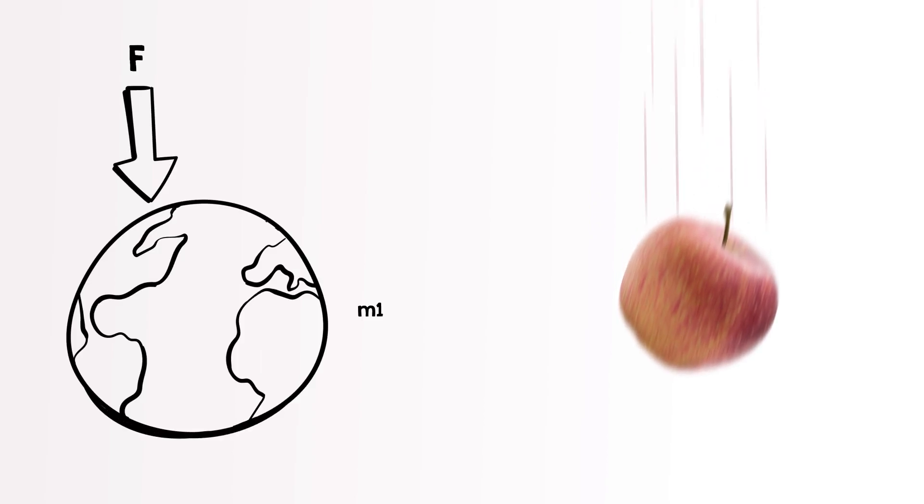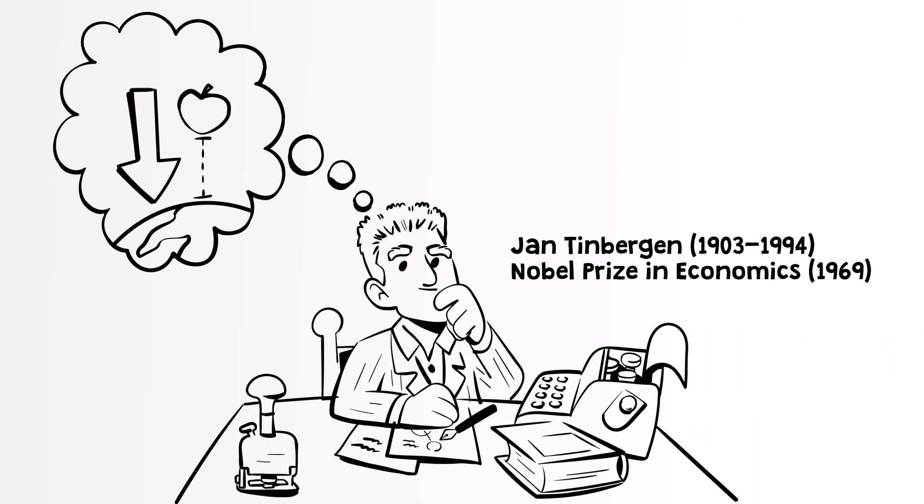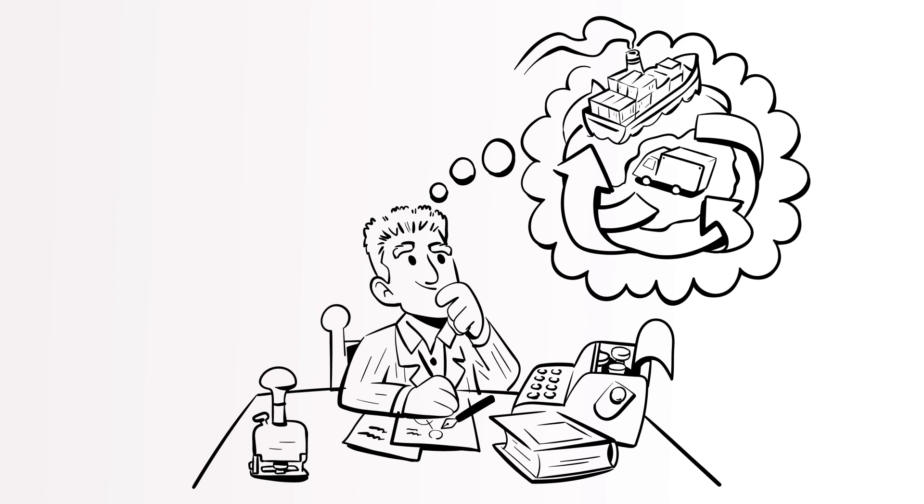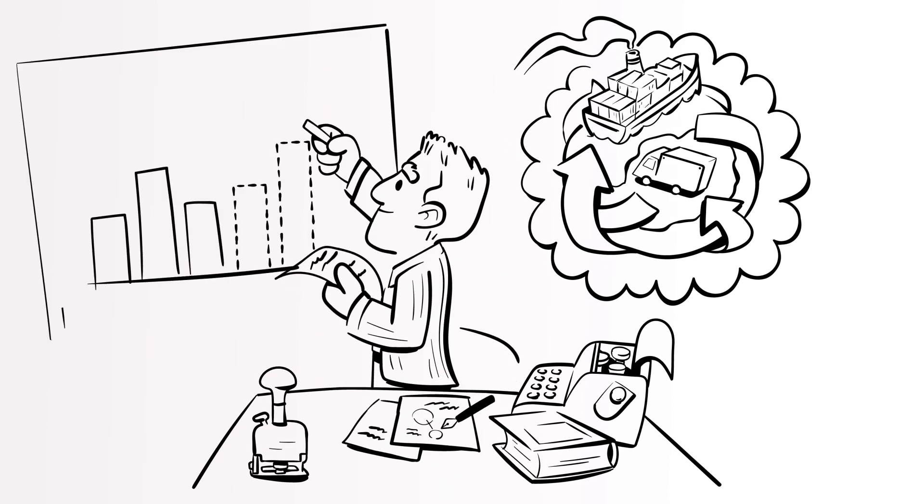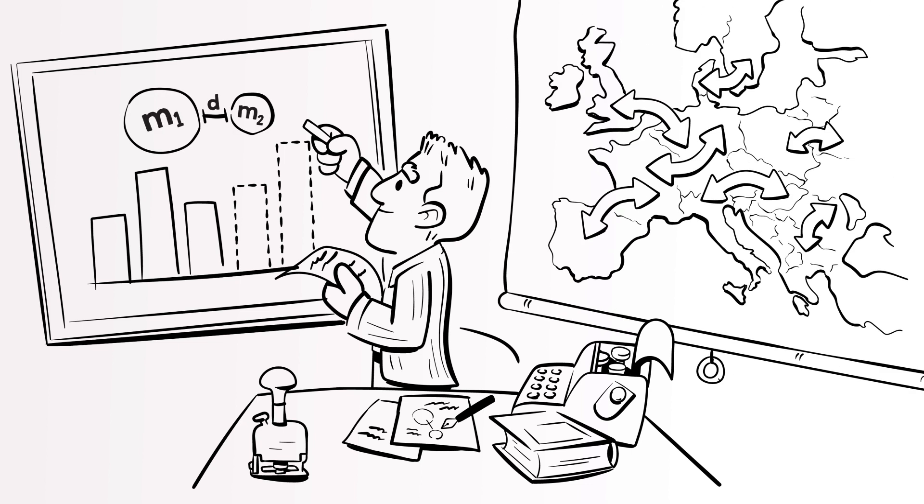We can calculate the gravity force with the mass of the earth, the mass of the apple, and the distance between the two. Jan Tinbergen, a Nobel Prize winning economist, introduced this formula into economics by applying it to trade. He showed that you can predict trade with a gravity formula. Countries trade more when they are bigger and closer to each other.